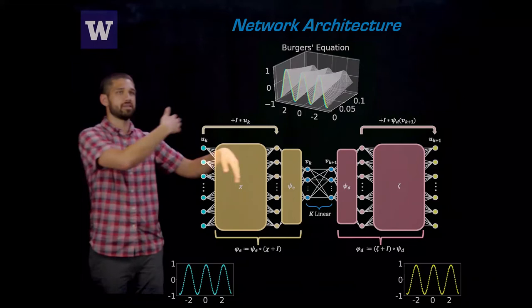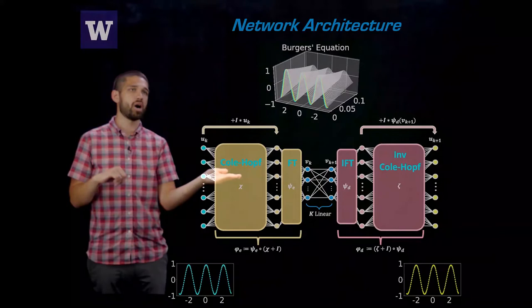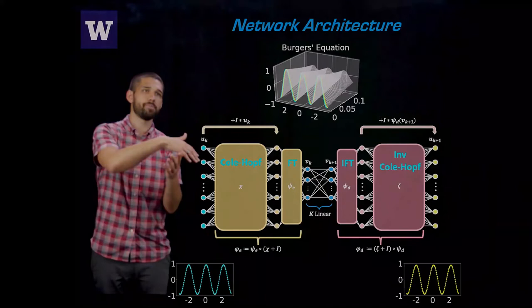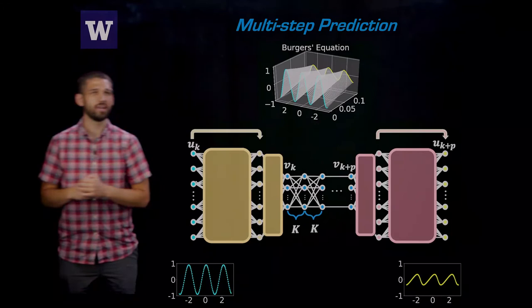And then for the decoder, we have everything the same on the other side. That's just going to invert everything for us. So if we want to go back to Burgers equation and think about what this all means in terms of our example, you could think of this outer encoder as doing something like a Cole-Hopf. This inner encoder is doing something like a Fourier transform, where if you want to reduce dimensionality, you throw away some Fourier modes. And then we have an inverse to the Fourier transform and the Cole-Hopf in our decoder.